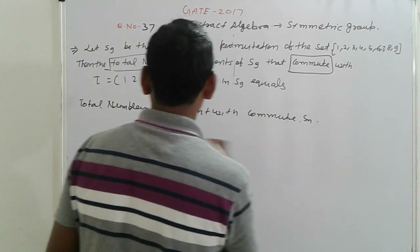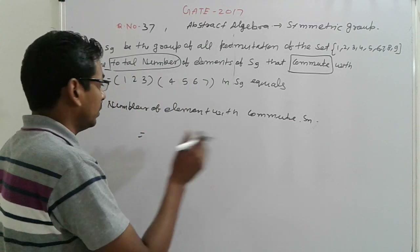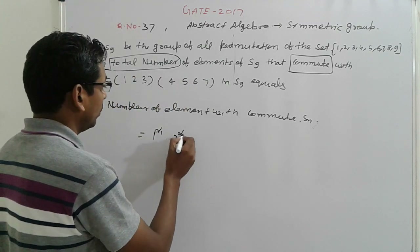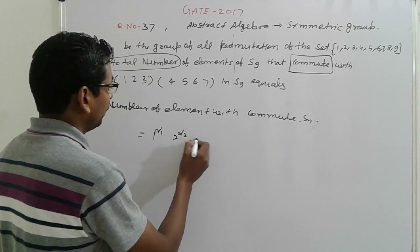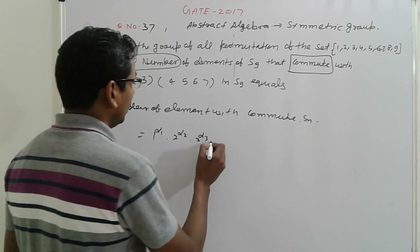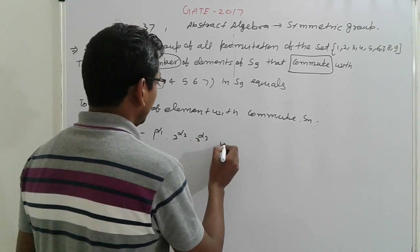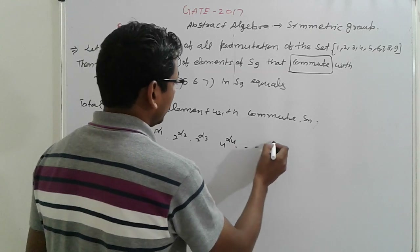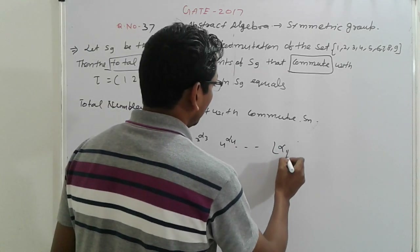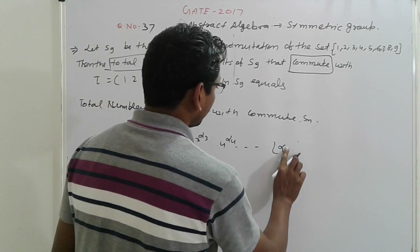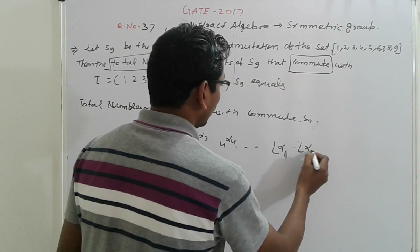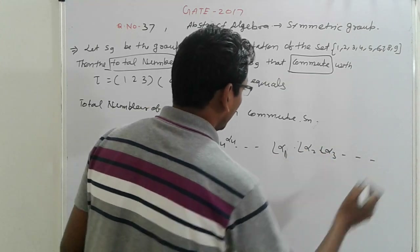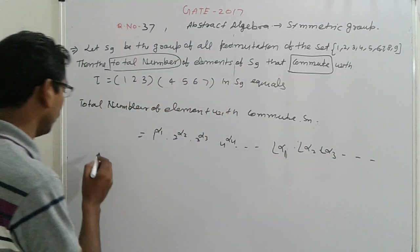So that is a simple base — remember the formula and you can solve the problem. The total number of elements that commute in Sn with something of cycle type 1 raised to alpha-1, 2 raised to alpha-2, 3 raised to alpha-3, 4 raised to alpha-4, and so on, times factorial alpha-1, factorial alpha-2, factorial alpha-3, and so on.